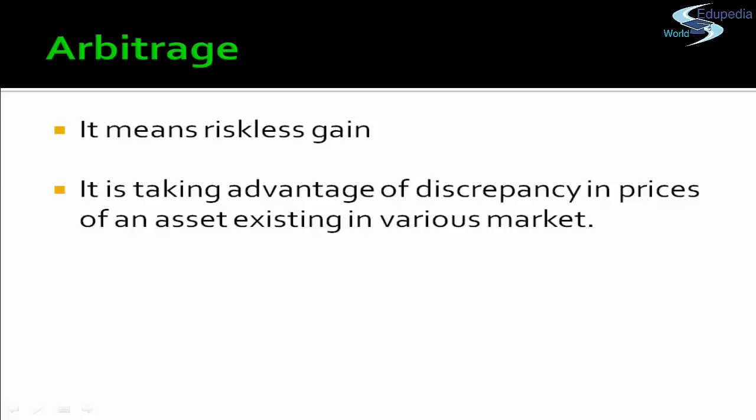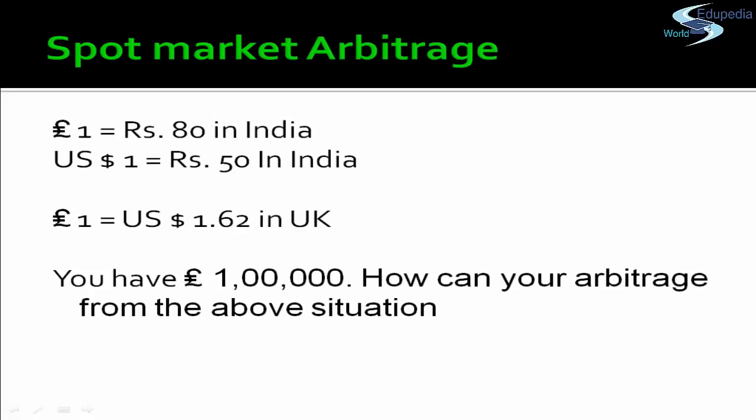Next, when there is a disequilibrium situation, there is a riskless gain or arbitrage opportunity. Arbitrage is taking advantage of a discrepancy in the price of an asset that exists at different rates in different markets. There are spot market arbitrage and forward market arbitrage. In spot market arbitrage, the arbitrageur takes benefit from differences in spot market rates across different markets.